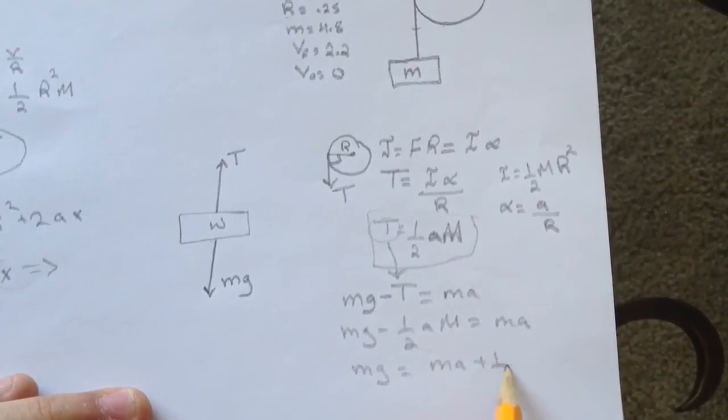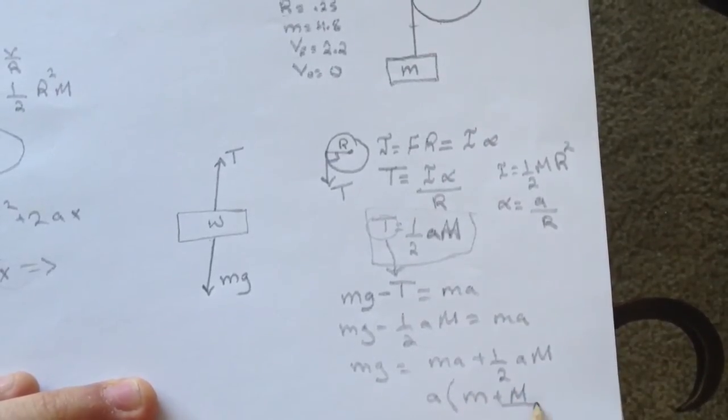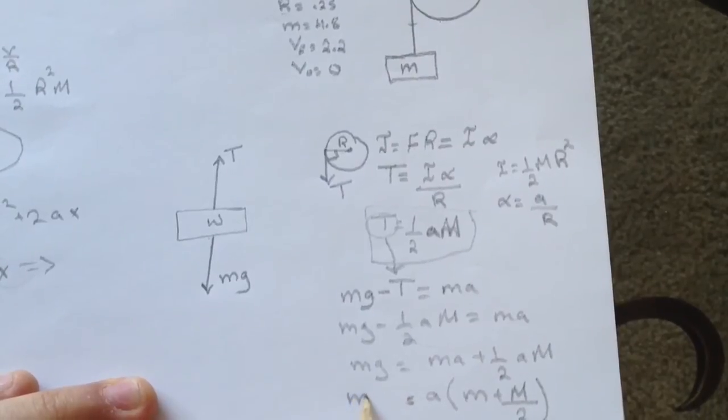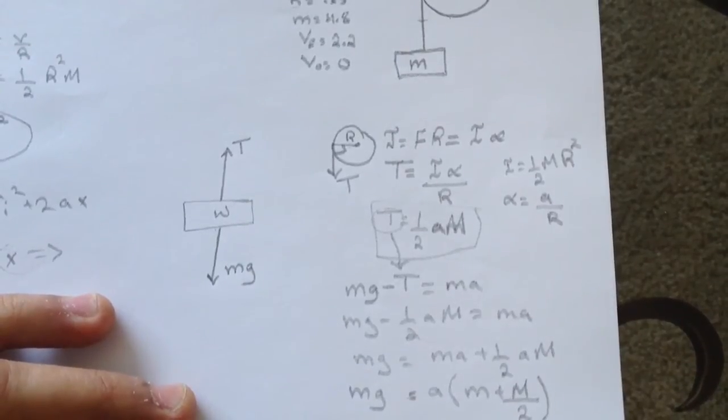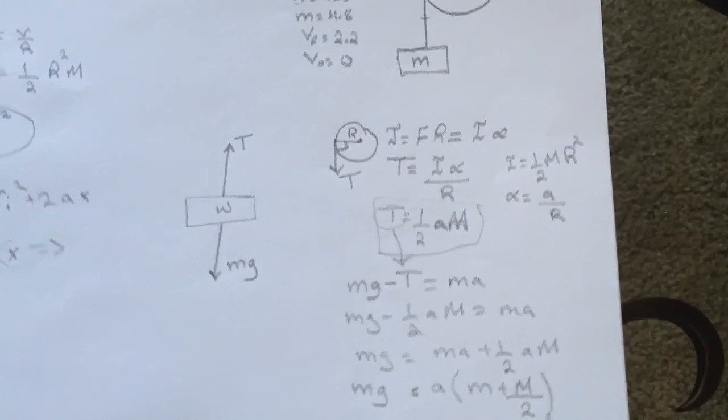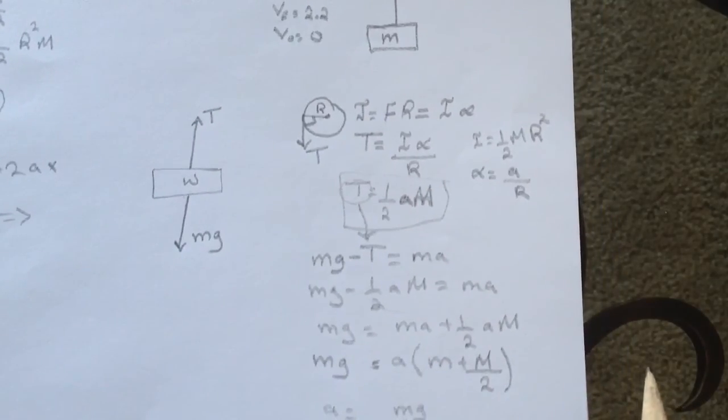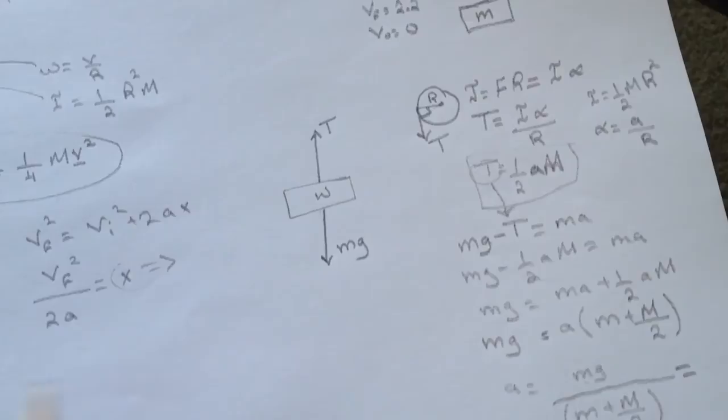The a equals mg divided by m plus M over 2. You know all the values—you know m, you know M, you know g—you just find the value for this acceleration. Now substitute the a we have here.